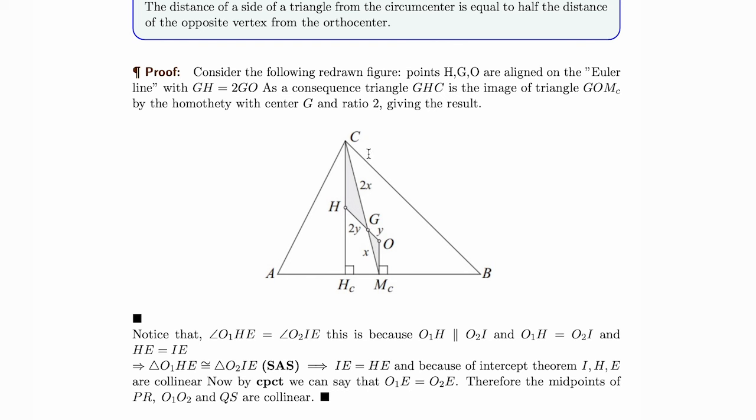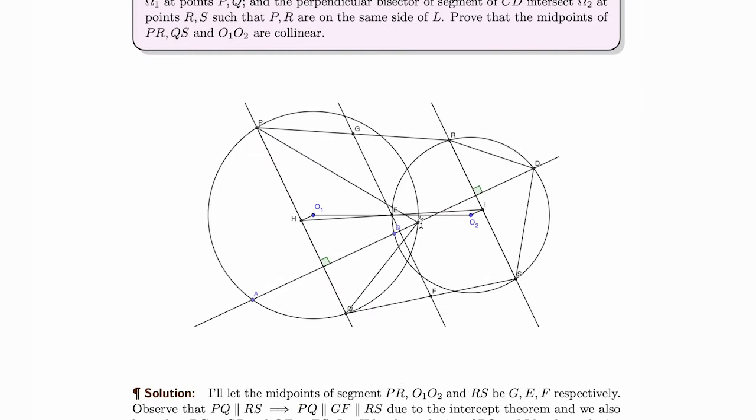And now, looking at the following triangles CHG and MCOG, we can see that there is a homothety with centroid G of ratio 2. So, that gives us that half CH equals 2 equals OMC. This gives us that BC, which is the length this one, is equal to 2·O1H and similarly BC is equal to 2·O2I.